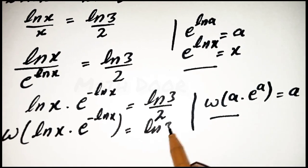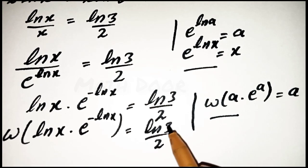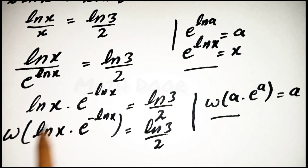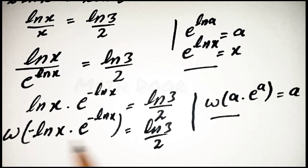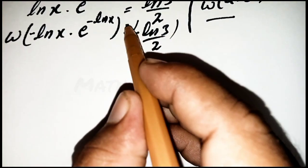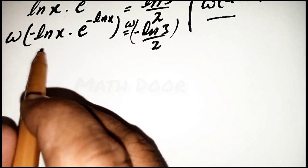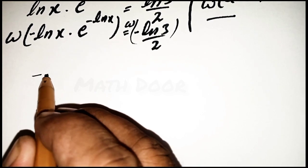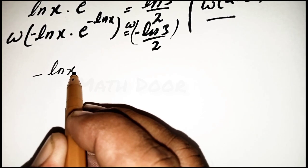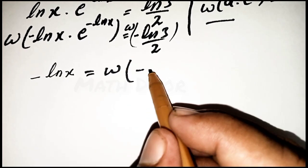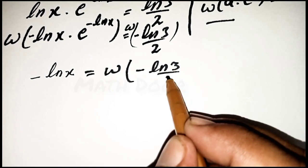We write the equation as W[ln(x)·e^(−ln x)] = ln(3)/2. We can see that here we have −ln(x) in the exponent but a positive ln(x) in front, so we apply −ln(x) to both sides of the equation. According to the formula, the left side becomes −ln(x) = W[−ln(3)/2].